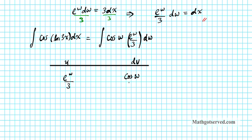We're going to keep integrating until the cosine function shows up again. If I integrate cosine, I get sine W. The sign doesn't change because if you differentiate sine, the sign stays the same. Now let's differentiate E to the W over 3 — factoring out one-third, the derivative is still E to the W over 3.